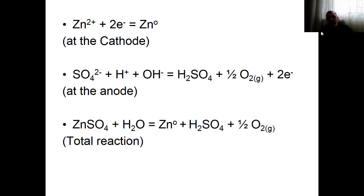As you see here, at the cathode, Zn²⁺ gets two electrons to form Zn⁰. And the sulfates at the anode — the oxidation of water takes place. Oxidation of water gives us oxygen gas at the anode and H⁺ ions and electrons. This electron is taken by zinc to form metallic zinc. The total reaction is: ZnSO₄ + H₂O → Zn⁰ + H₂SO₄ + O₂.